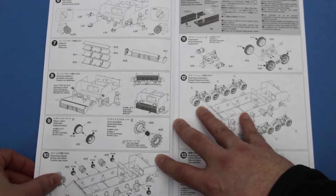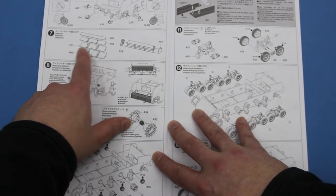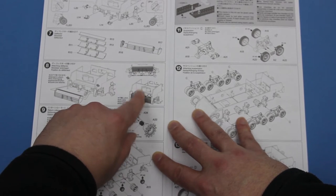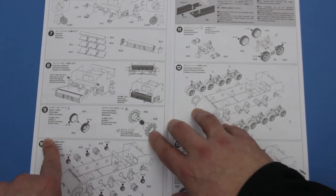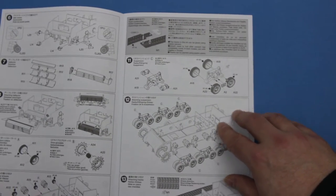And then we're straight on into building the lower hull here. This is the exhaust deflector that can be moved out of the way. And the same as the real thing. We're putting the suspension and the sprockets on.